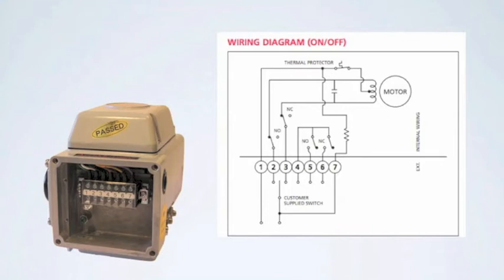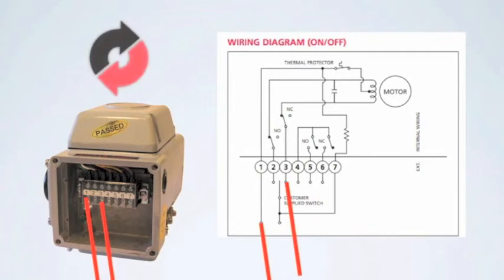To close or drive the actuator in the clockwise direction, apply power to Terminal 1 and Terminal 3. The actuator will turn clockwise until it reaches the internal limit switch and shuts off.